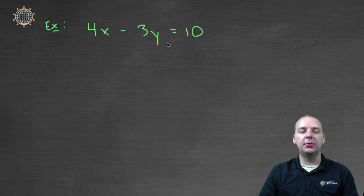Let's say we had four x minus three y equals ten. Would you call that a linear equation? Yes, we do. So this is a yes.